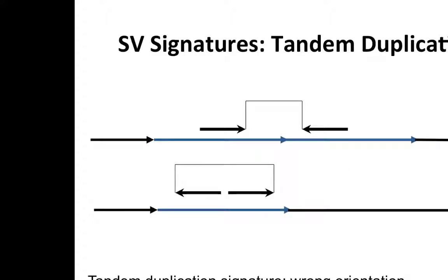Another type of structural variation is a tandem duplication, where a sequence in the donor has been copied and duplicated at the same location. If pairs are sampled from the end of the first copy spanning the breakpoint and going to the start of the second copy, when mapped to the reference — which has no second copy — the pair has to map back to the start of the duplicated sequence. The orientation of the pairs becomes incorrect: instead of pointing at each other, they point away from each other. This is another signature we can use to find these events.